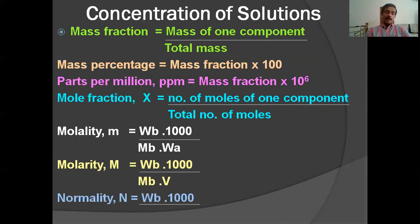Normality N is equal to W_B × 1000 divided by E_B × V, where W_B / E_B is the number of equivalents (E_B is equivalent mass) and V is volume. In both molarity and normality, volume appears in the equation, so with a change in temperature you can expect a small change in their values. But molality, mole fraction, and mass fraction do not change with temperature because temperature has no effect on mass.